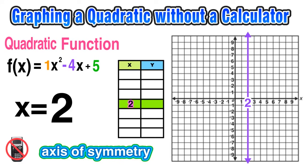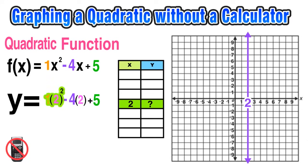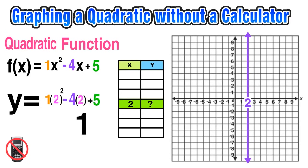We don't know where the parabola is on the y-axis yet, but we know the x-coordinate of the vertex is positive 2. Now we need to find the y-coordinate. Since x is 2, I replace x with 2 in the original function and evaluate: 1 times 2 squared is 4, minus 4 times 2 is negative 8, plus 5. And 4 minus 8 plus 5 equals 1. So the y-coordinate is positive 1, giving us the vertex at (2, 1).